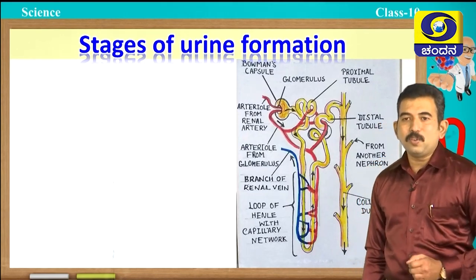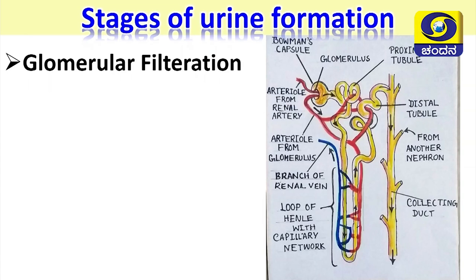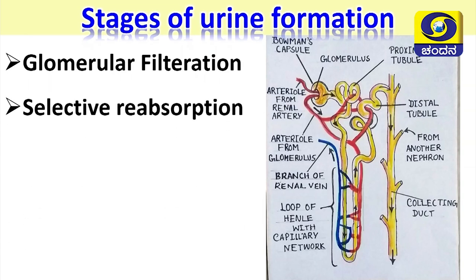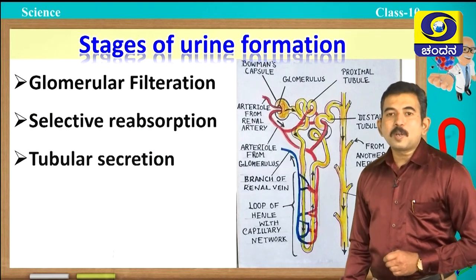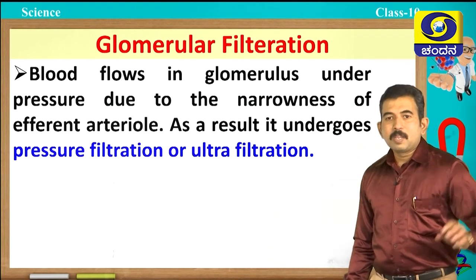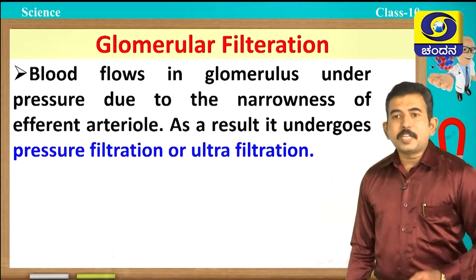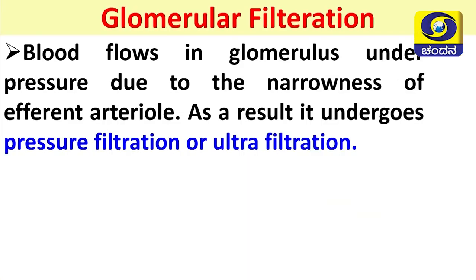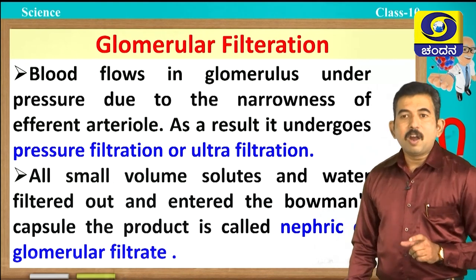Now let us discuss the stages of urine formation. There are mainly three stages. First is glomerular filtration: blood flows into the glomerulus with high pressure, and because of the narrowness of the efferent arteriole it undergoes pressure filtration or ultrafiltration. All small solutes and water are filtered out into the Bowman's capsule. The product is called glomerular filtrate or nephric filtrate.